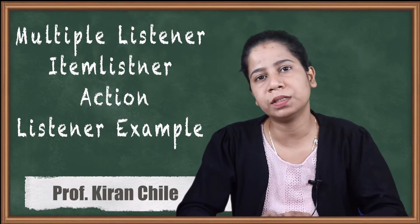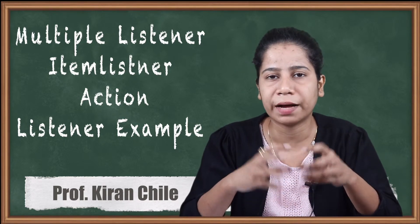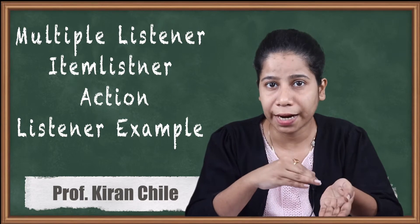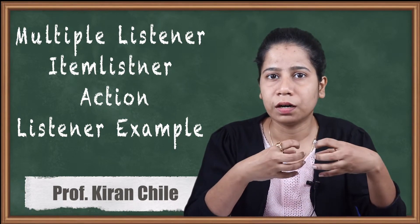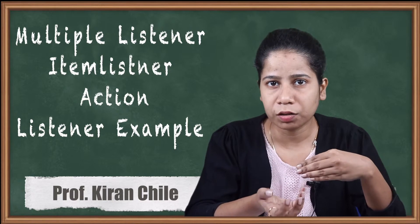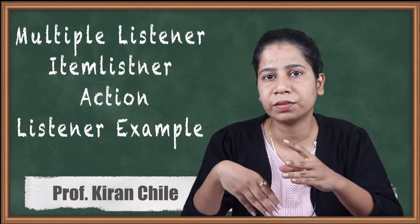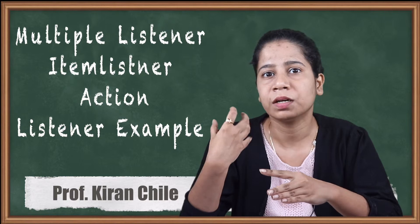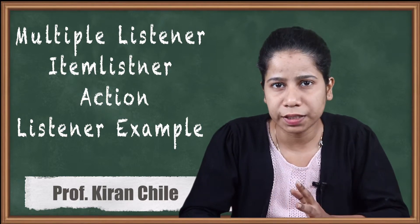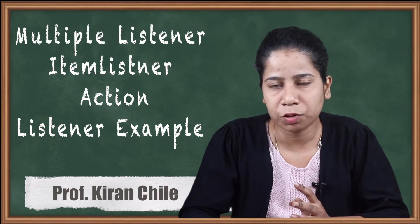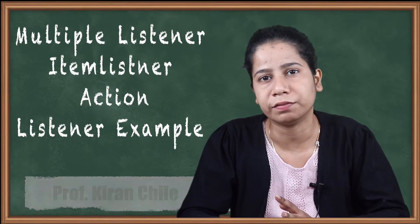In the example I am going to show you, we will be having one Item Listener and one Action Listener. The Action Listener will work whenever we are having buttons, and the Item Listener whenever we are having some special kind of events. So we will see an example of the same so that you can understand how to handle multiple events.